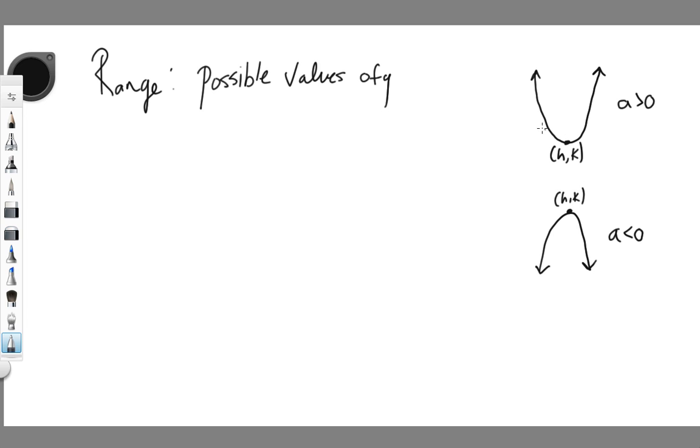So if you look at this graph, in this case, everything is above that k value. Everything is greater than the k value. In this case, when a graph opens up, this is where we have a minimum, or a minimum value. So basically what that means is your range is given by y is greater than or equal to that k value of your vertex, the y value of your vertex.